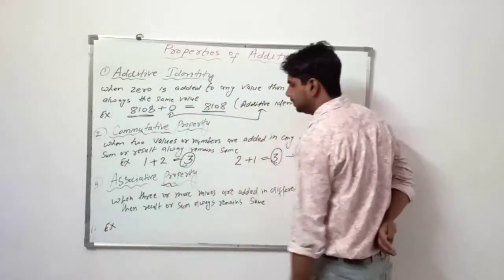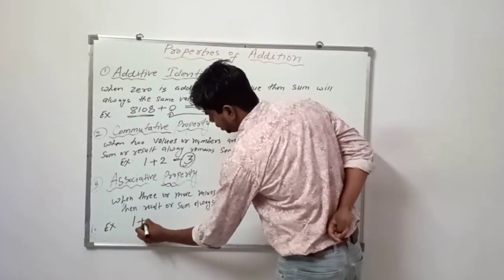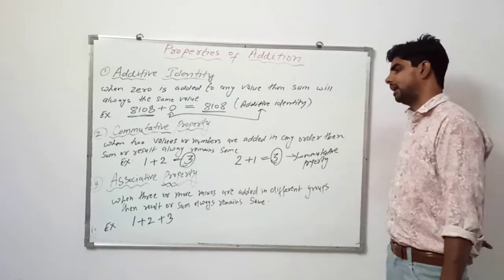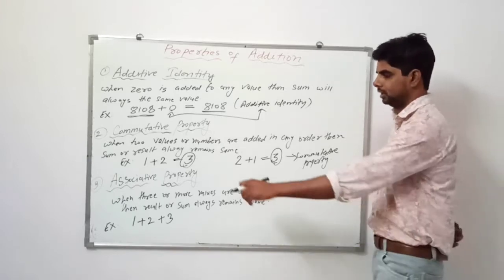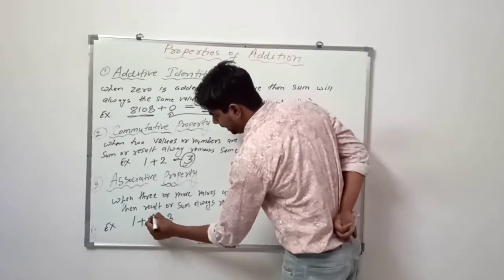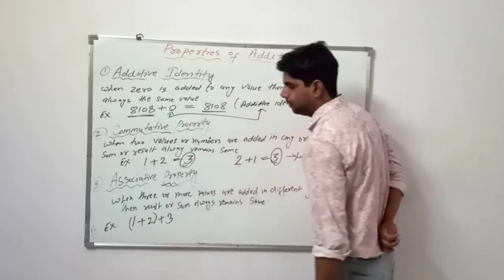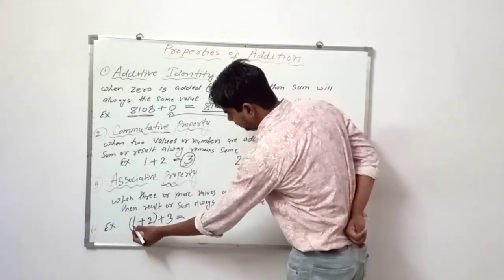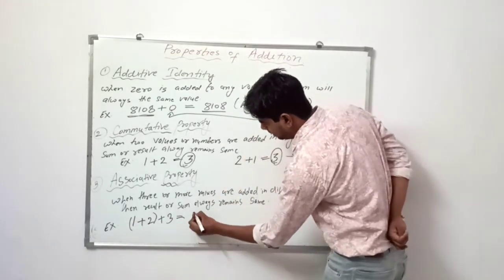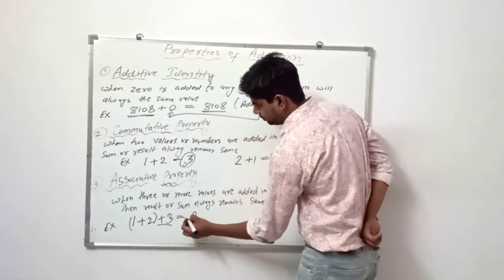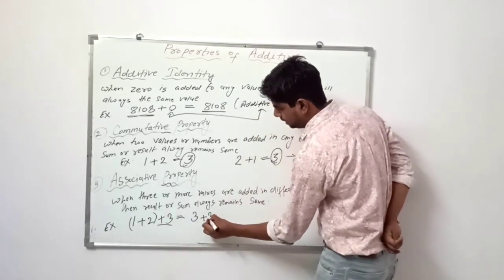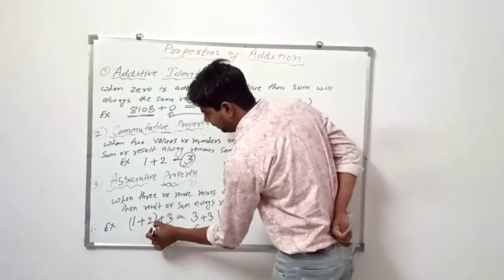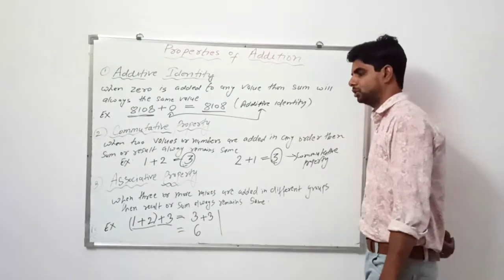For example, suppose we have three numbers: 1 plus 2 plus 3. We add them in different groups. In the first group, we group 1 plus 2 and solve it first. 1 plus 2 equals 3, and then we add 3 to it, giving an answer of 6. So here we have grouped and solved 1 plus 2 first.